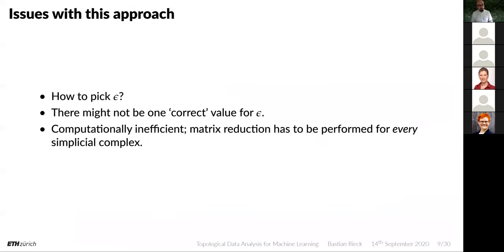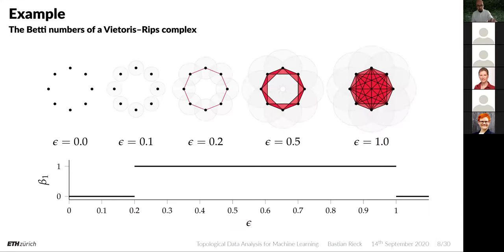There are certain issues with this approach. The first obvious issue is: how can we pick this epsilon parameter? There might not be one correct value for epsilon — do we pick 0.2, 0.21, or something close to one? It's very hard and intractable because we would technically have to run the matrix reduction algorithm from the last lecture for every simplicial complex we get, for every value of epsilon. This is really not smart — it's really inefficient.